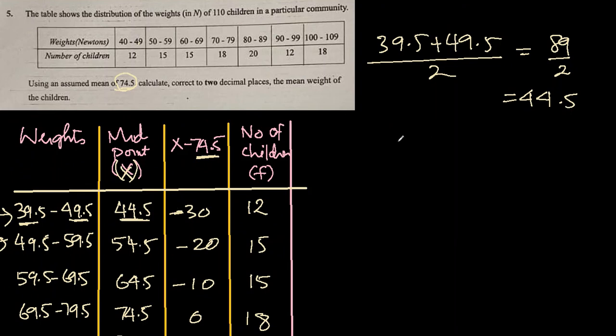Now, if we want to find the mean, let's say x bar, we add all the differences with x minus, in this case, it is 74.5. Let's say this 74.5 is assumed mean a. So x minus a multiplied by the frequency divided by sigma frequency.